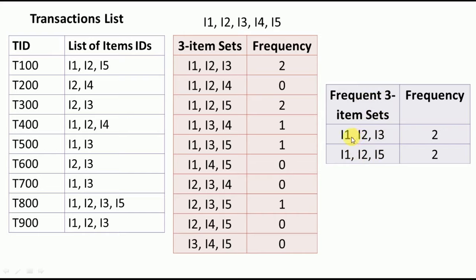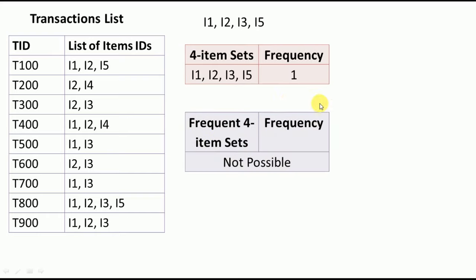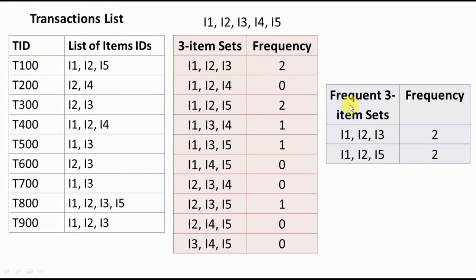Now, I1, I2, I3, and I5 are present in the frequent three-item sets, so we can try to form a four-item set: I1-I2-I3-I5. Counting its frequency, it appears only 1 time, which does not satisfy the minimum support of 2. Hence it will not become a frequent four-item set. Since there is no frequent four-item set, we go back one level — the frequent three-item sets I1-I2-I3 and I1-I2-I5 with frequency 2 are the final answer.